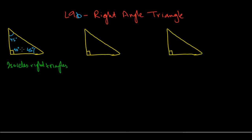So your other two angles are equal to each other. If you remember from triangle properties, if two angles are equal, then the sides opposite to these angles are also equal. So the side opposite to 45 here — this leg of the triangle — let's say this is X. Then this leg, which is opposite to the other 45, is also X.